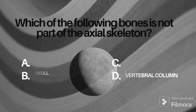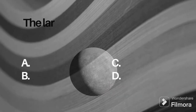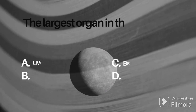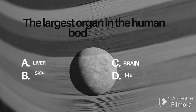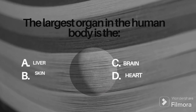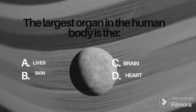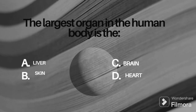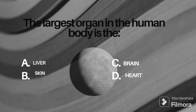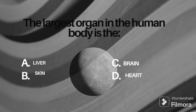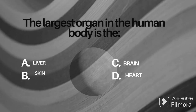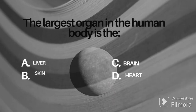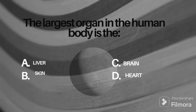Question 9: the largest organ in the human body is? Option A: liver, B: skin, C: brain, D: heart. Give your right answer in the comment box.